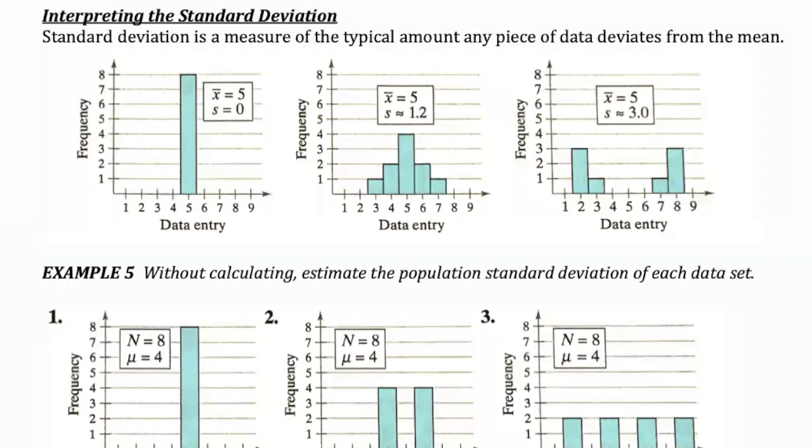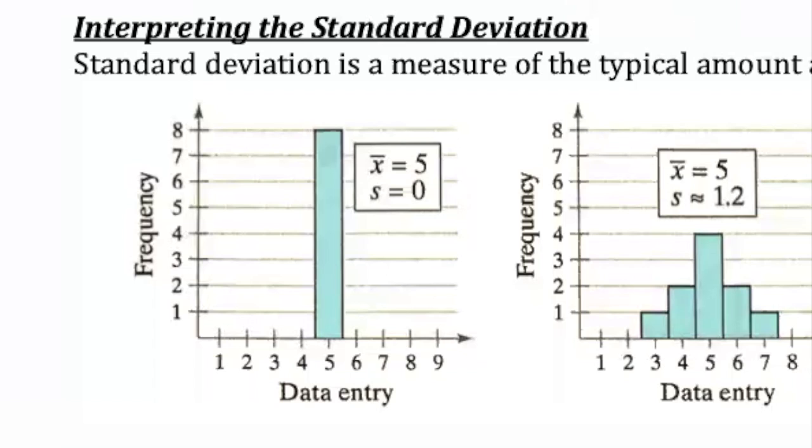So let's begin by looking at these three graphs. In the first graph, we are told that this sample has a mean of 5 and a standard deviation of 0. So why does that make sense? Well, keep in mind that standard deviation is a representation of how far the data is from the mean.